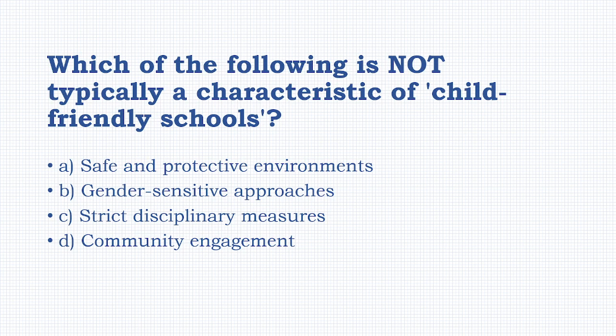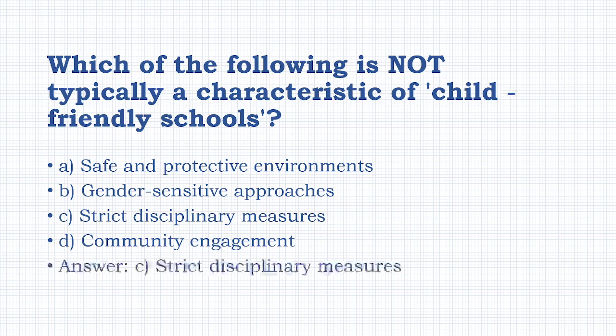Which of the following is not typically a characteristic of a child-friendly school? Options: safe and productive environment, gender-sensitive approaches, strict disciplinary measures, community engagement. The answer is option C: strict disciplinary measures.